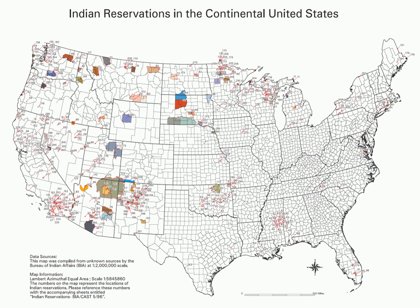Alaska Natives previously had many small reserves scattered around Alaska; however, all but one — the Annette Island Reserve of the Shimshian — were repealed with the passage of the Alaska Native Claims Settlement Act in 1971.